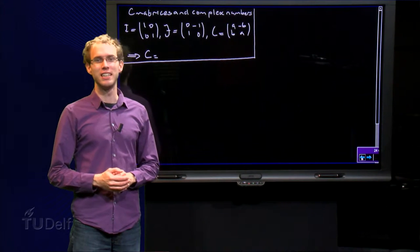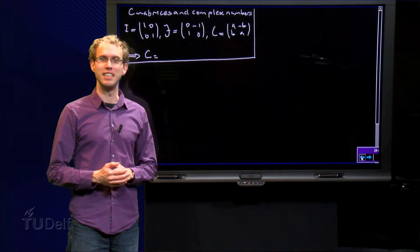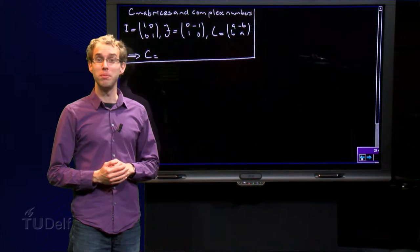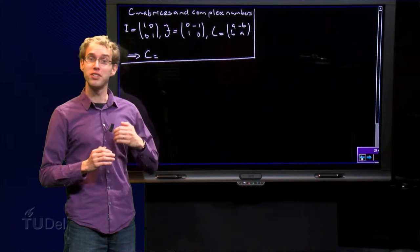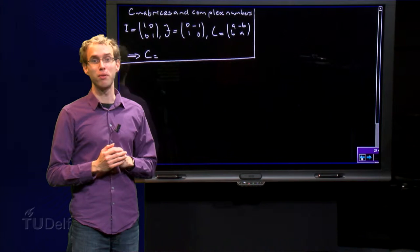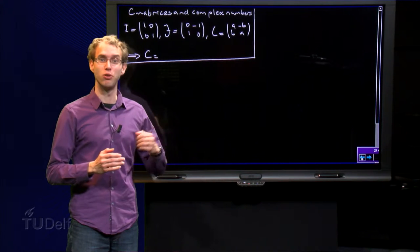You may have noticed that the behavior of C matrices looks a lot like the behavior of complex numbers. For example, the formula of C to the k looks a lot like the formula from De Moivre for z to the k.